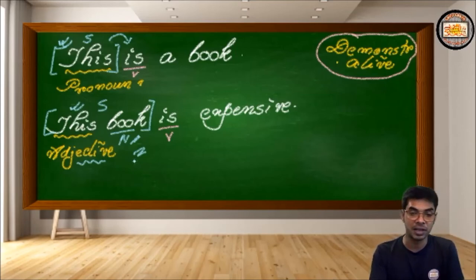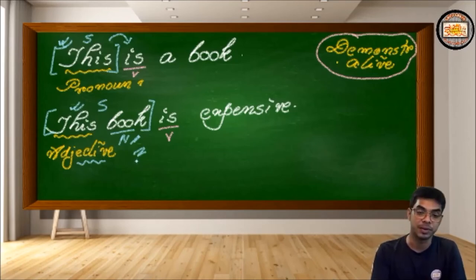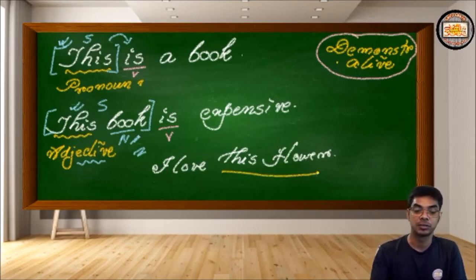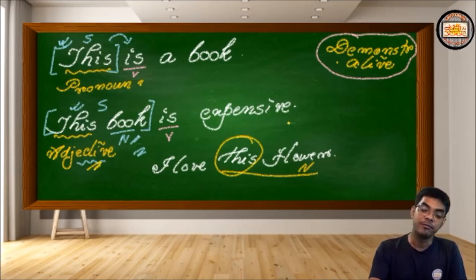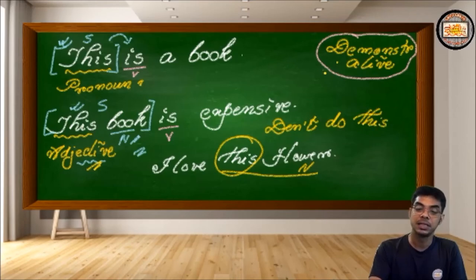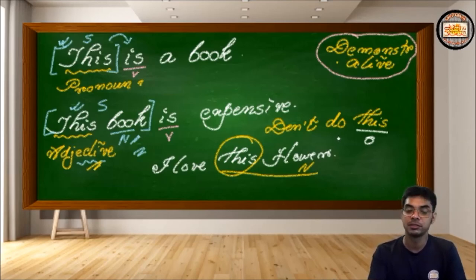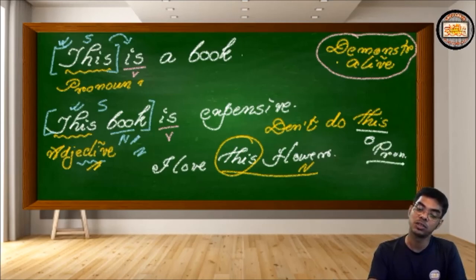For example, 'I love this flower' — here 'this' appears as the object, but it comes with the noun 'flower,' so it is a demonstrative adjective. But if you say 'Don't do this,' 'this' is the object of the verb and has no noun to support it — it stands as a single identity, so it is used as a demonstrative pronoun.